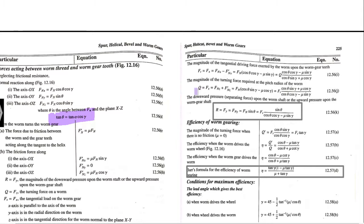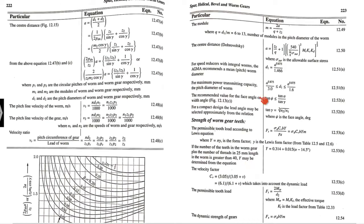To get the value of lead angle gamma, refer to Table 12.28 on page 244 of the data handbook. There, you can find different lead angles based on the pressure angle. If you specify the pressure angle, you can directly take the value of lead angle gamma from there. Once you have the value of gamma, you can move forward.